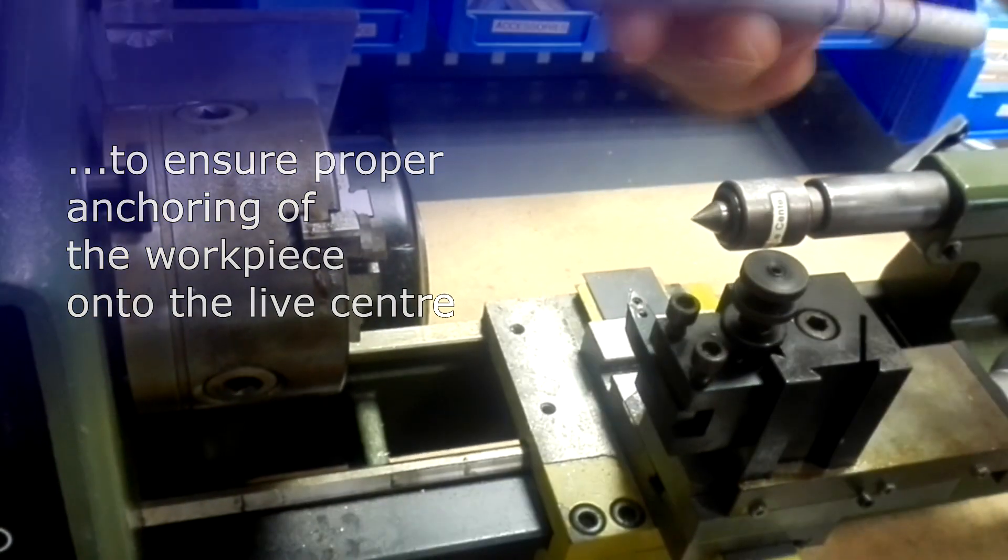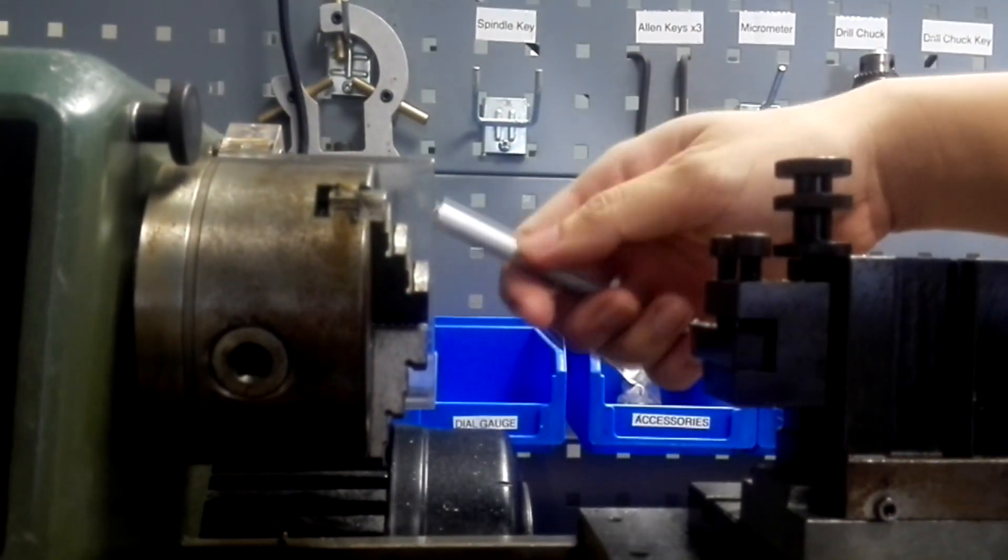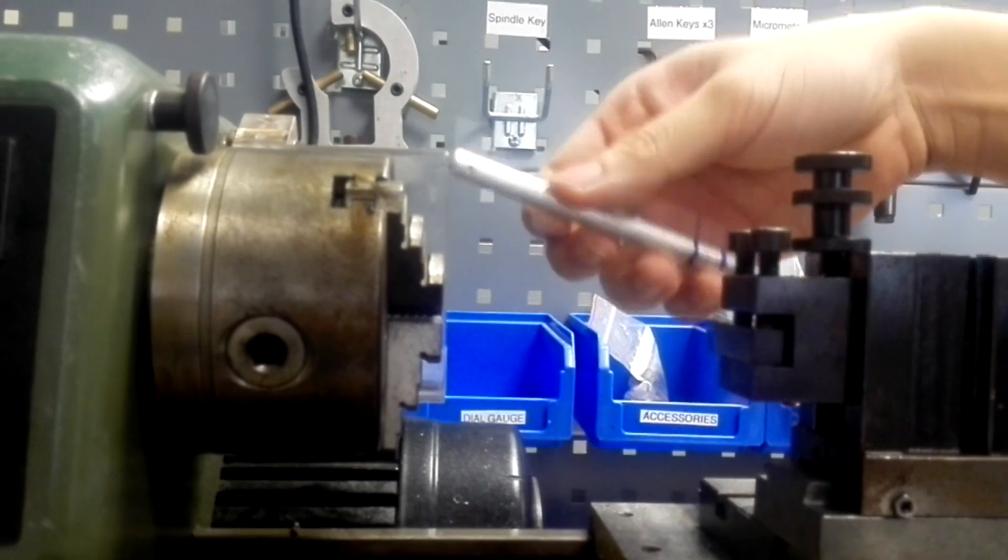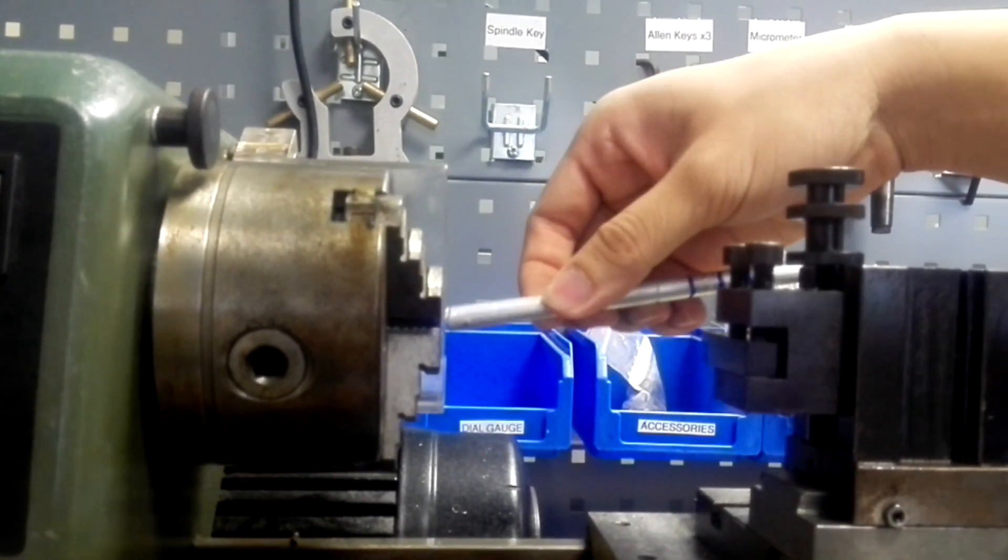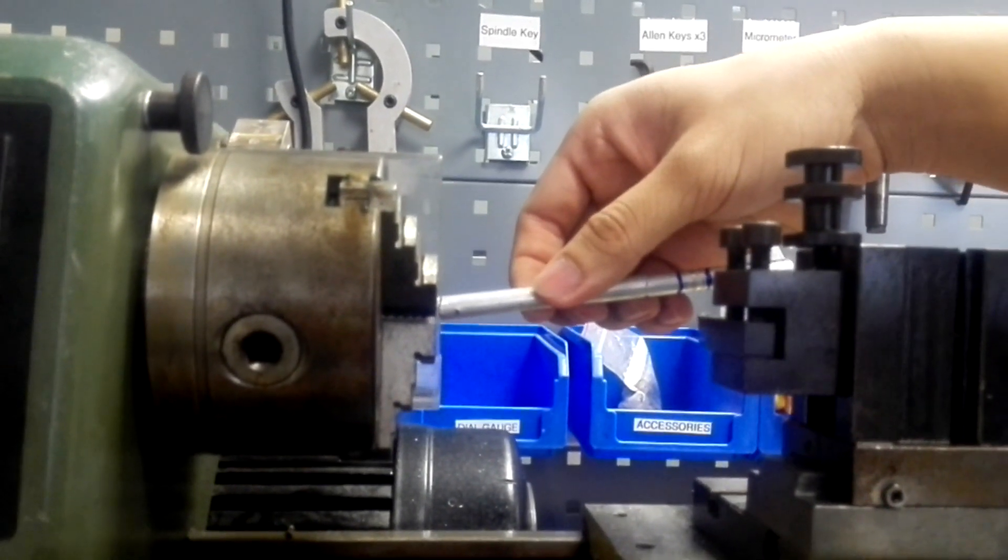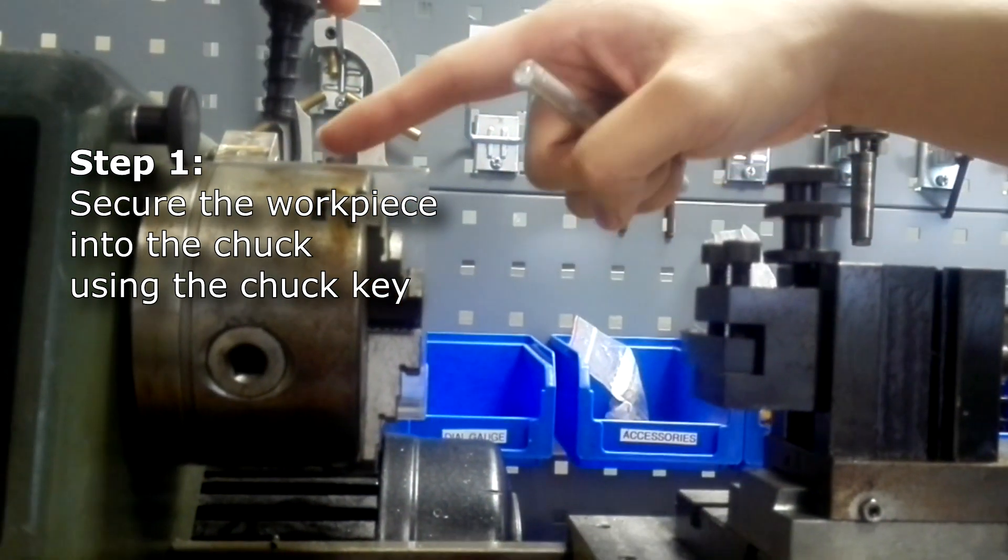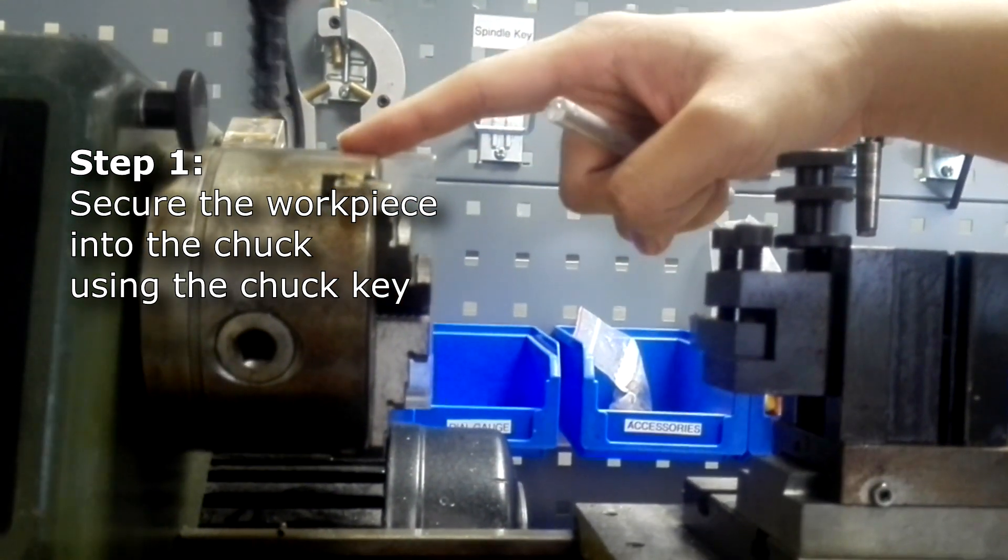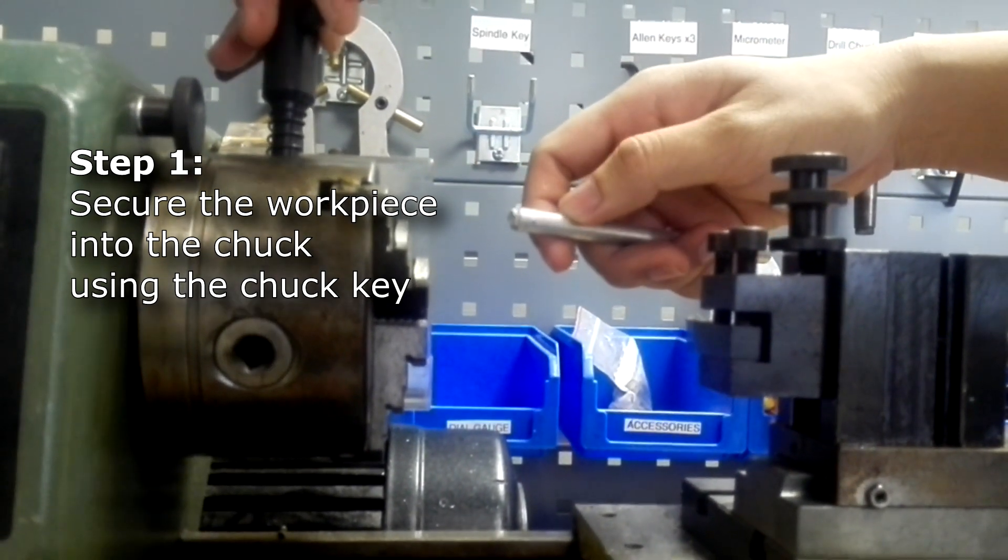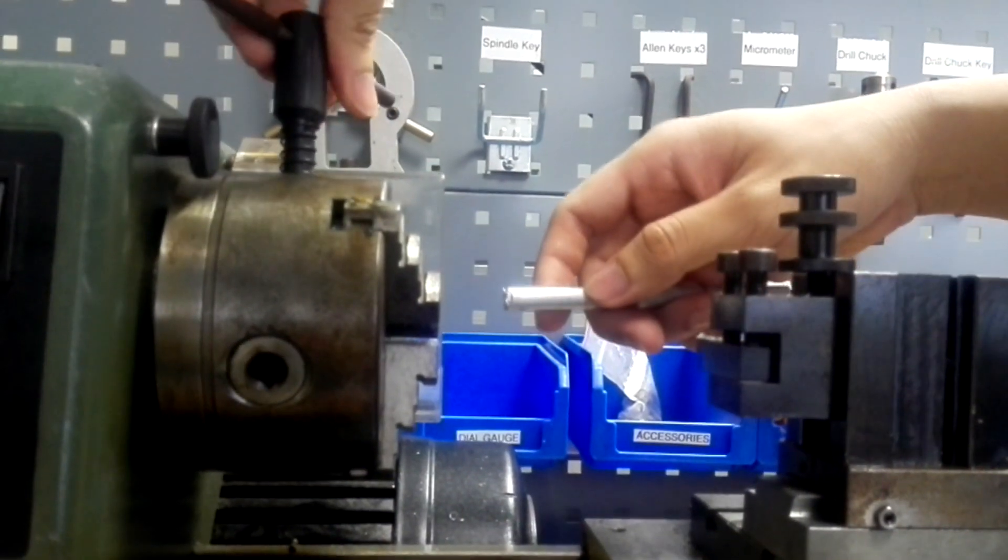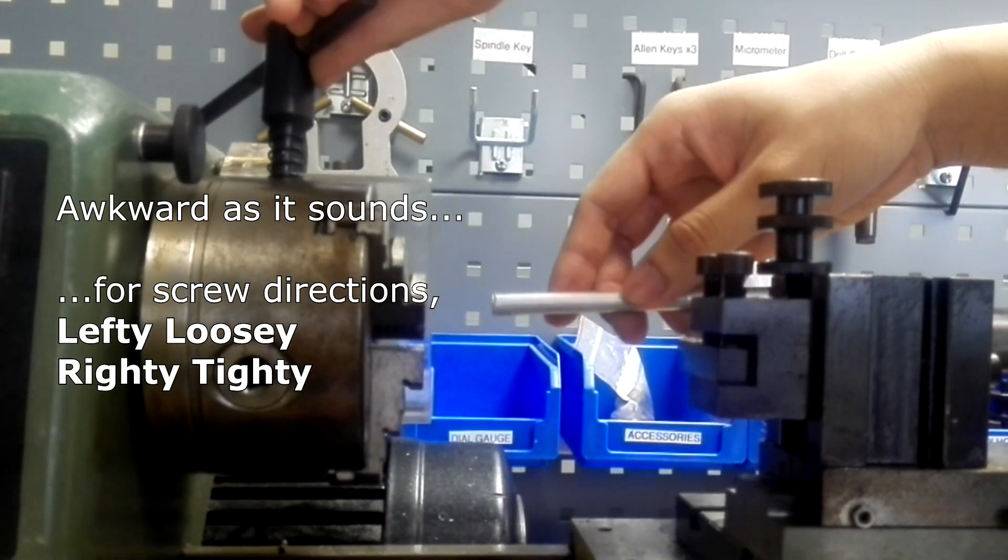How do we actually get this workpiece into the chuck? Check that the chuck is able to fit the workpiece first. In this case, it doesn't fit. So we are going to use the chuck key and insert into one of the holes and turn anti-clockwise to loosen. Remember this rule: lefty-loosey, righty-tighty.